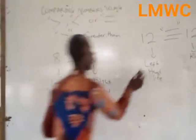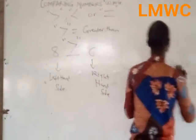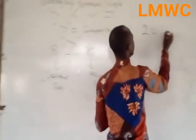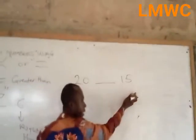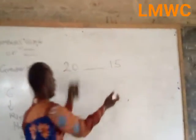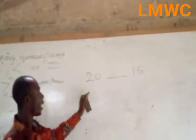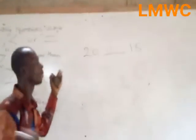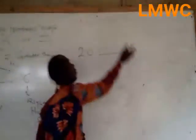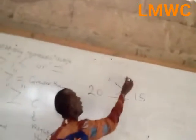Another example: 20 and 15. We have the right-hand side and the left-hand side. As I said, always, if the number at the left-hand side is bigger or larger than the number at the right-hand side, you put in your greater than.